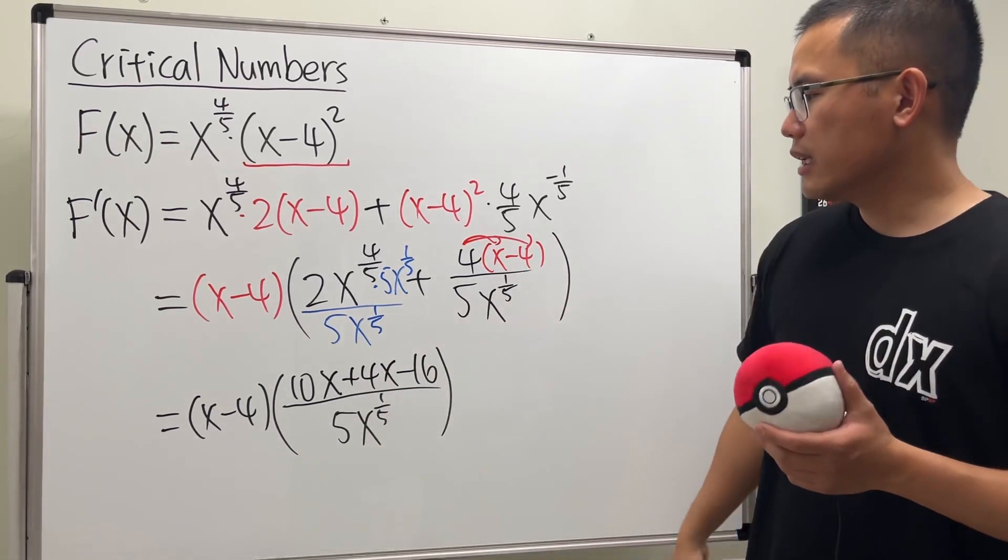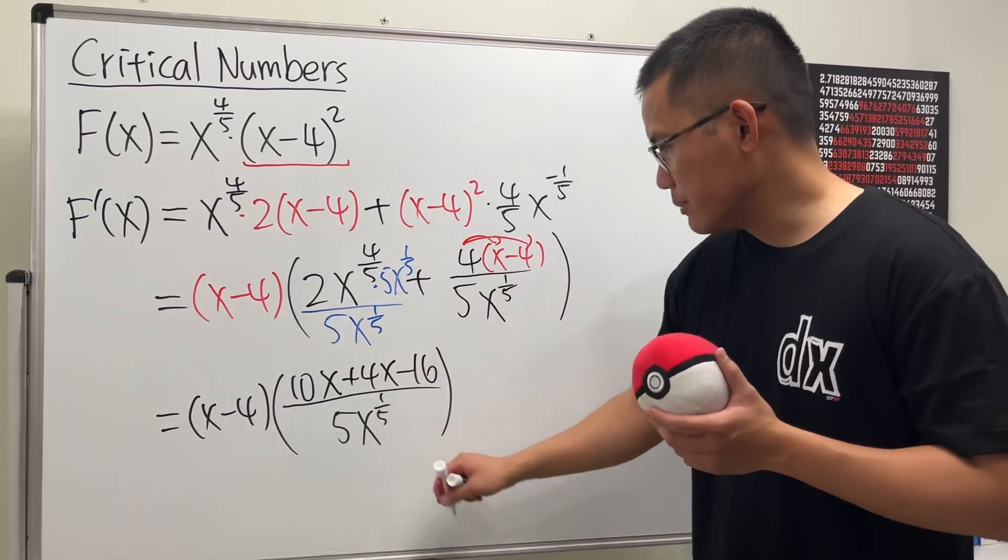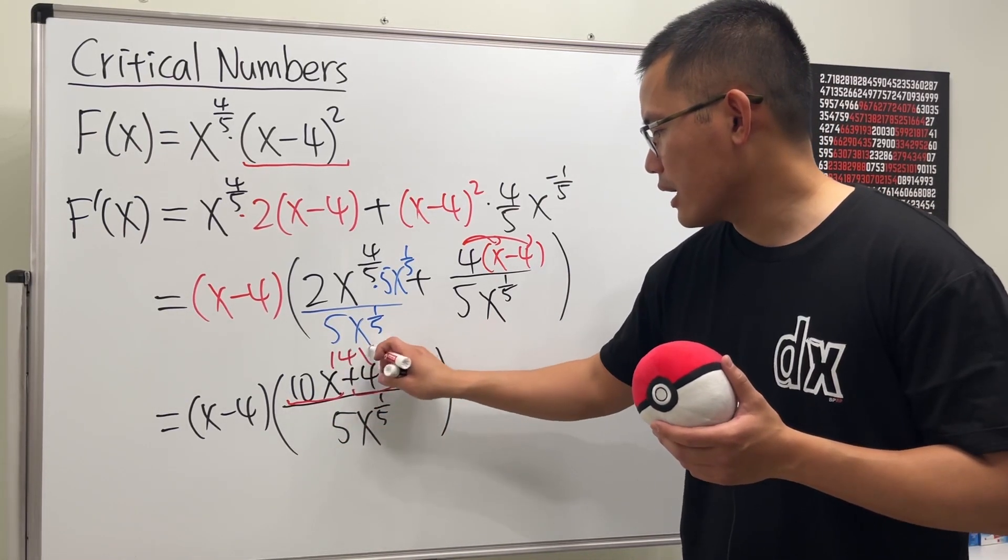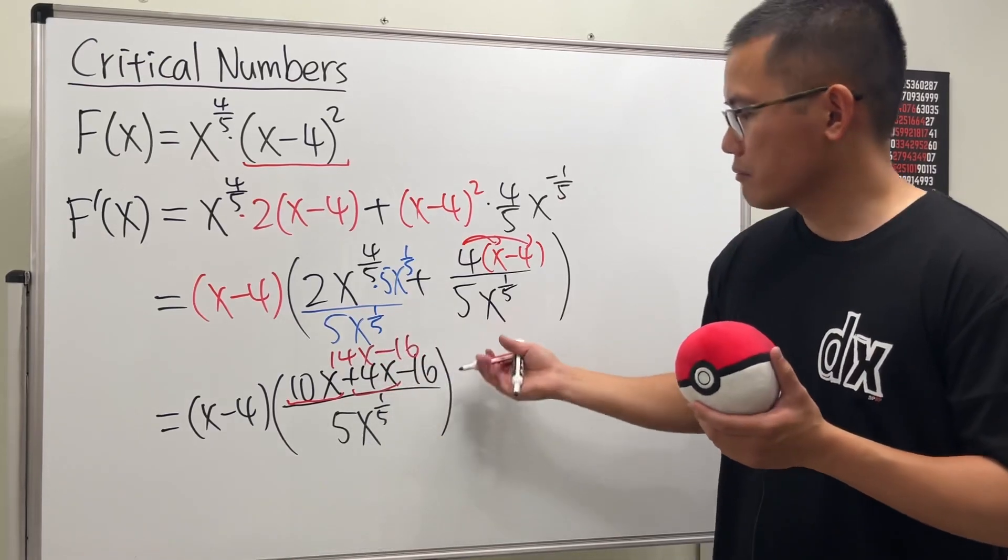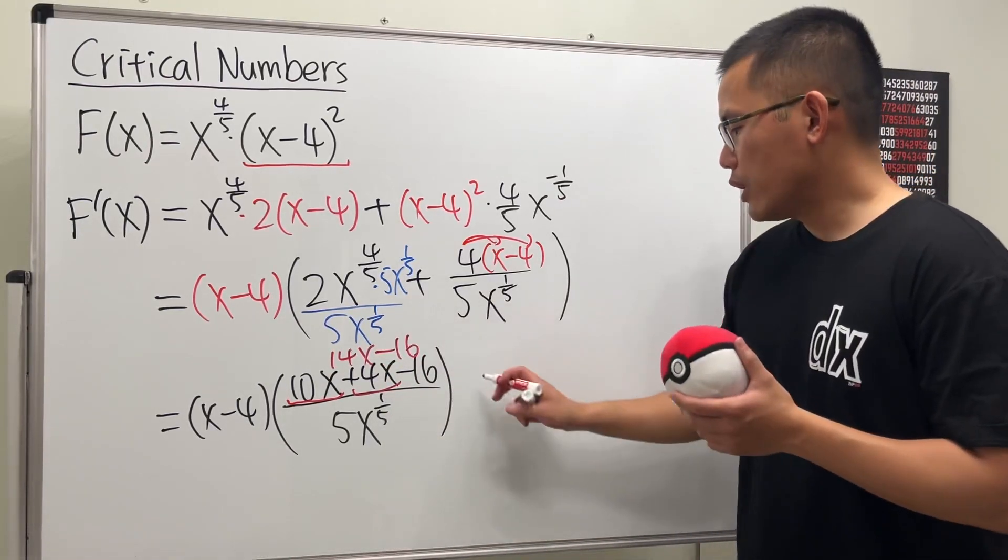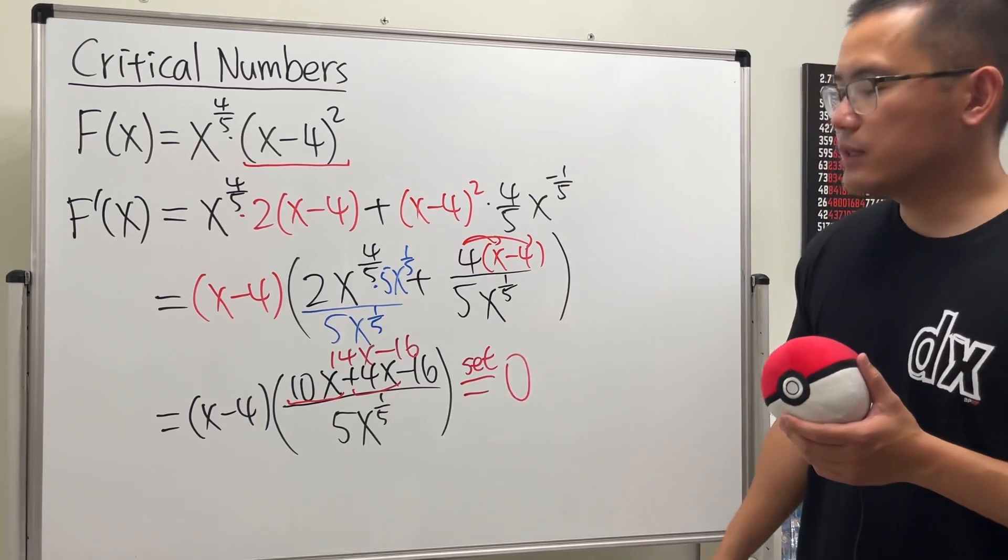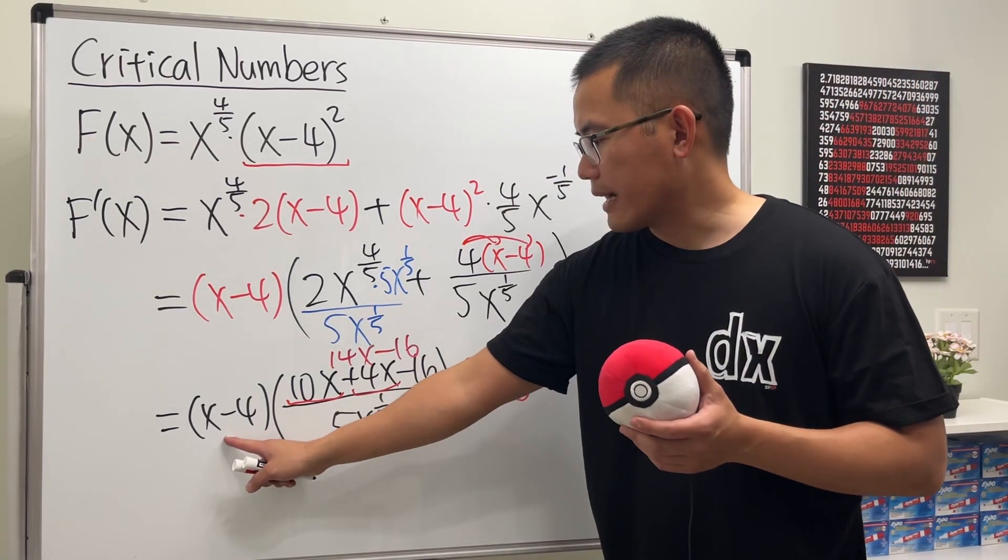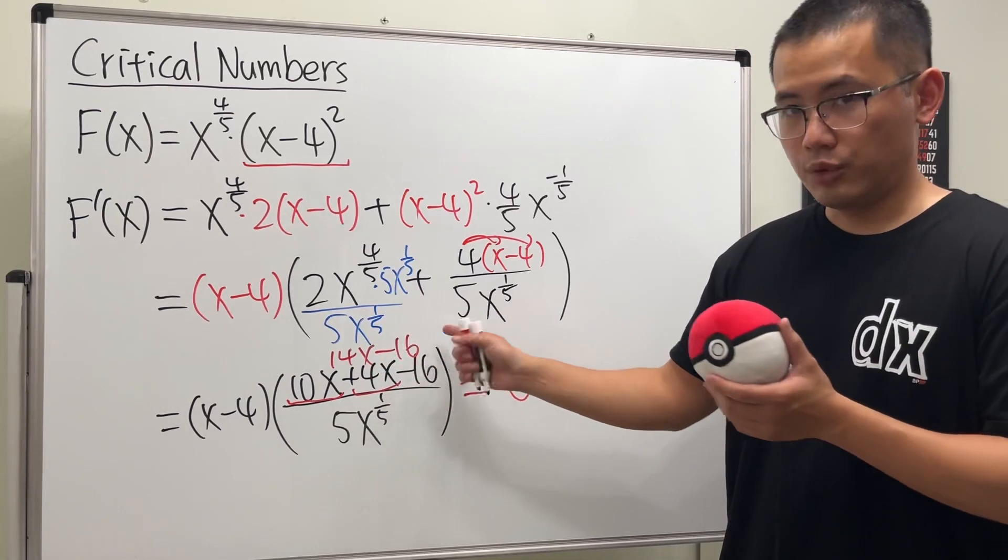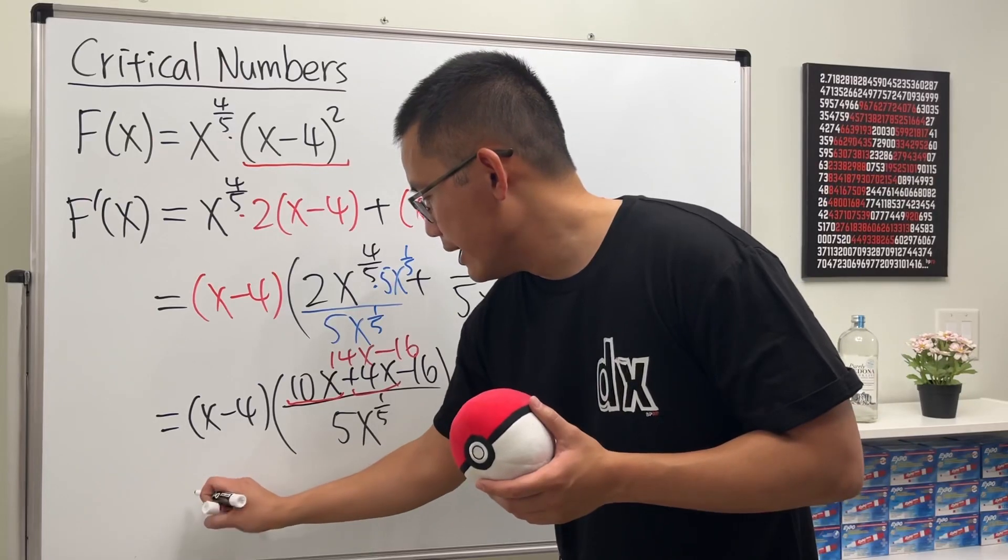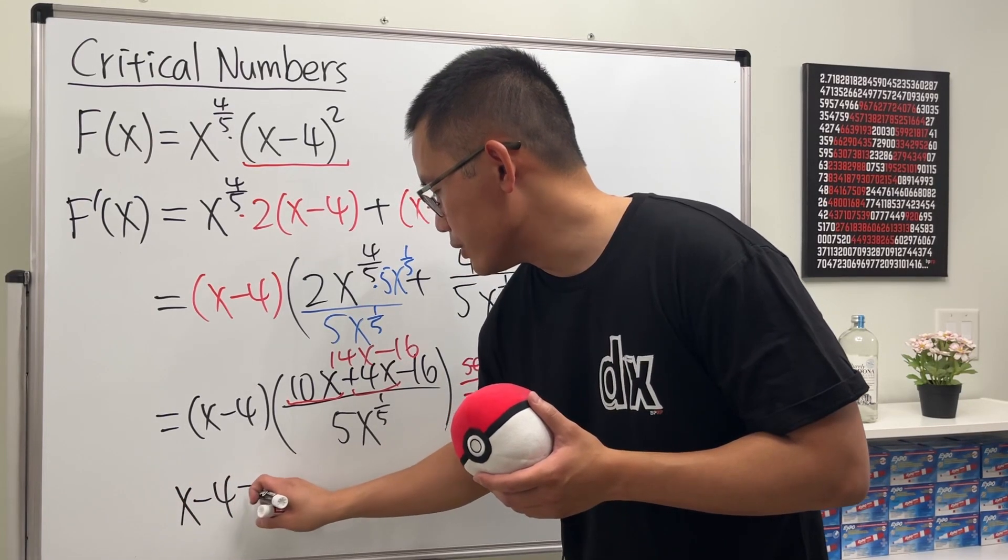That's what we have. Of course, right here we can simplify it—we can combine this and that, so that's 14x and then of course the minus 16. Now we're ready to just set this to be zero. For this case, we have to look at this factor and make that factor zero.